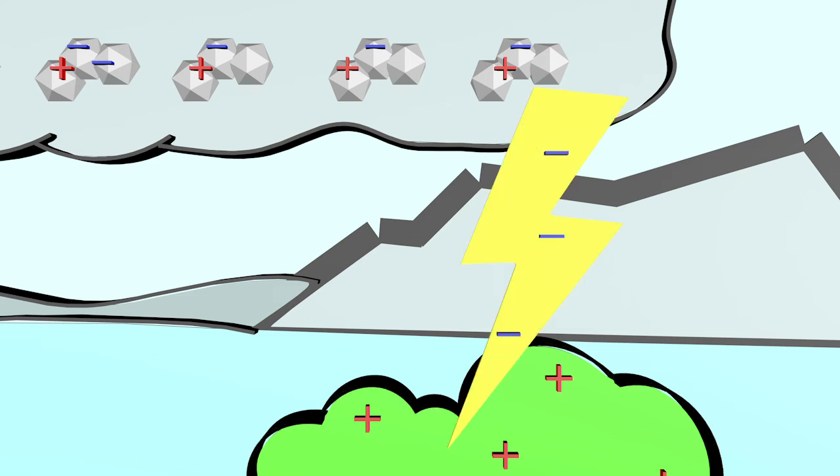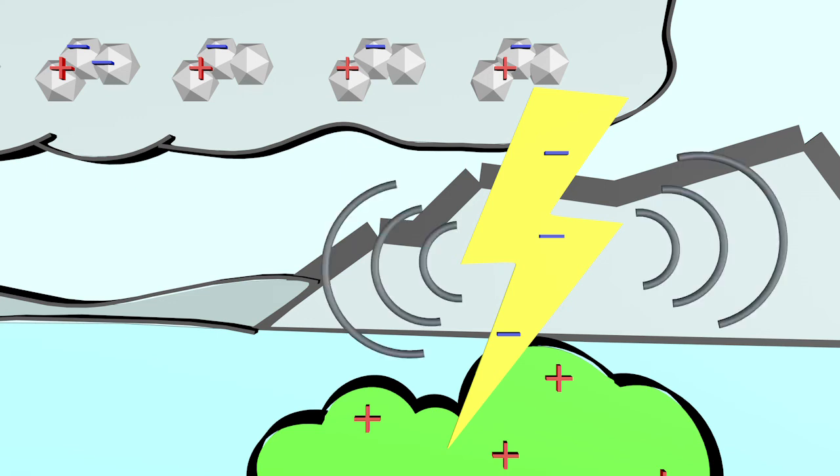The lightning occurs due to the rapid rise in air temperature. The air also expands extremely quickly. This creates a pressure wave that reaches our ears and that we perceive as a loud bang, thunder.